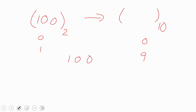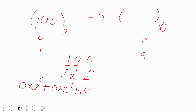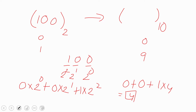If I have taken 100 in binary and need to convert it, first I need to find the weights of each digit. The weight of the rightmost digit is 2 to the power 0, the next is 2 to the power 1, and the next is 2 to the power 2. Then I compute the multiplication of each digit and its weight and sum them: 0×2⁰ + 0×2¹ + 1×2² = 0 + 0 + 4 = 4. So binary 100 converts to decimal 4.